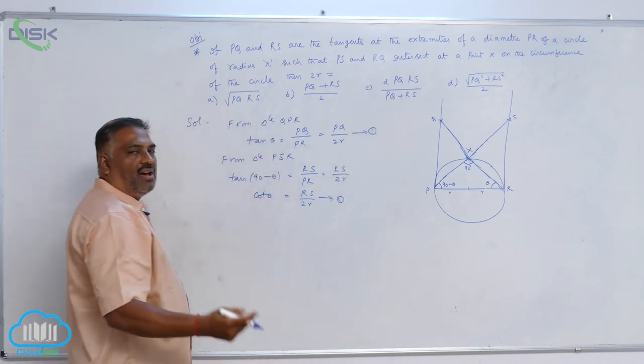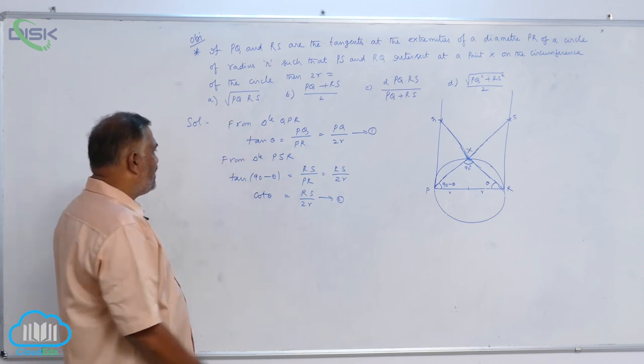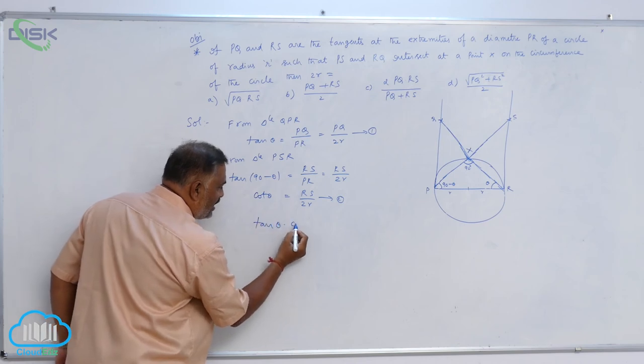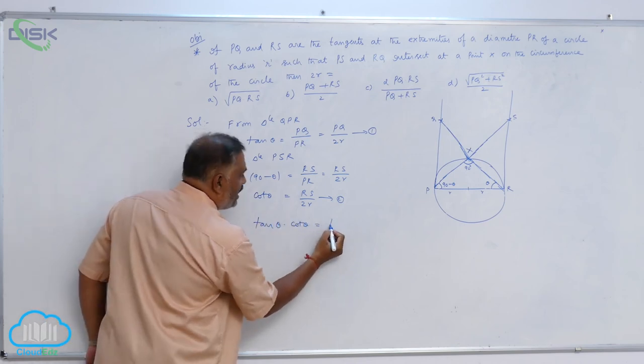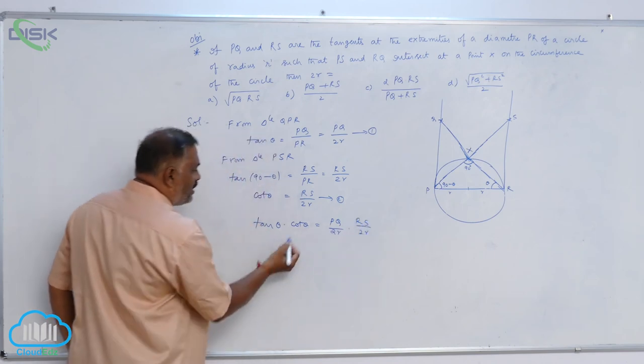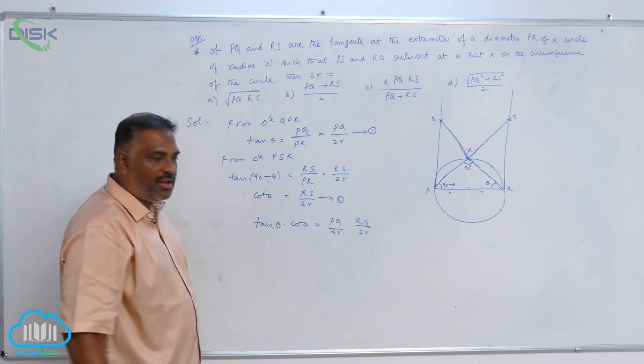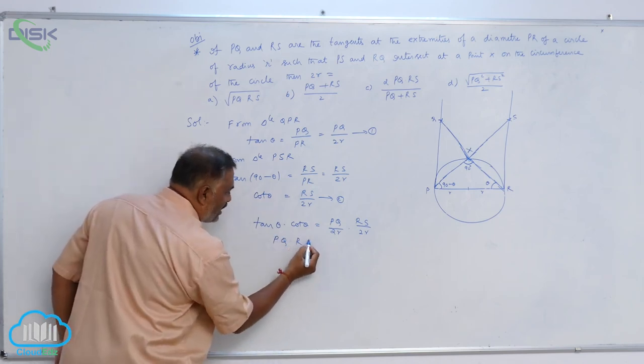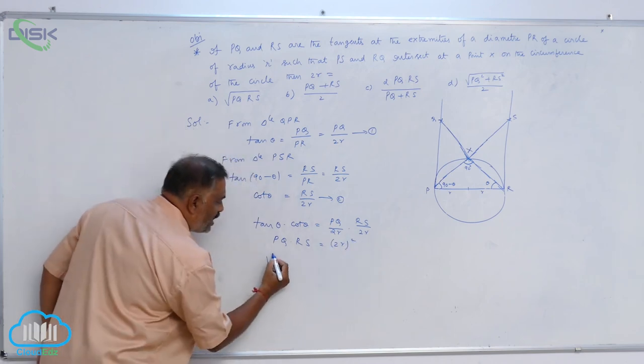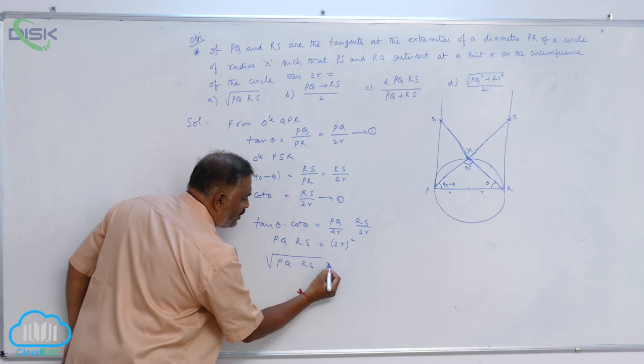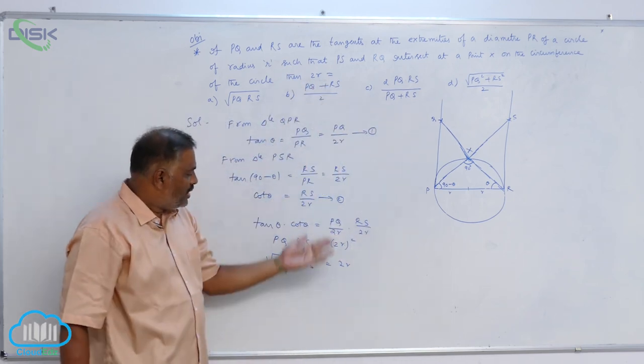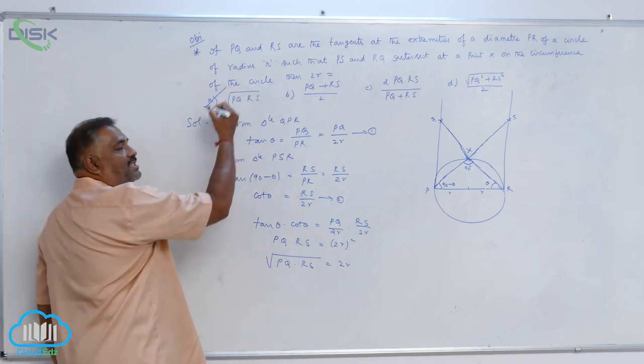Our target is to eliminate theta. Multiply these two equations. So, tan theta into cot theta is equal to PQ by 2R into RS by 2R. Tan theta cot theta equals 1. So, PQ dot RS is equal to 2R whole square. Square root of PQ dot RS is equal to 2R. Actually, we require the value of 2R. So, from options, I think A is correct.